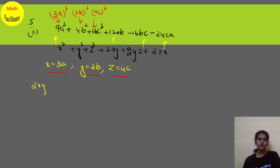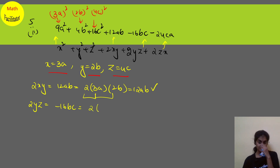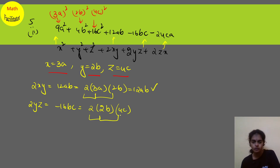Now comparing 2xy, 2yz, and 2zx: 2xy is 12AB, which is 2 times 3A times 2B — so 2 times 3 is 6, times 2 is 12, giving 12AB. For 2yz, we have minus 16BC — this is 2 times 2B times 4C, giving 16BC, but you want minus 16BC. So 4 times 2 times 2 gives 16BC, but the negative sign is needed.